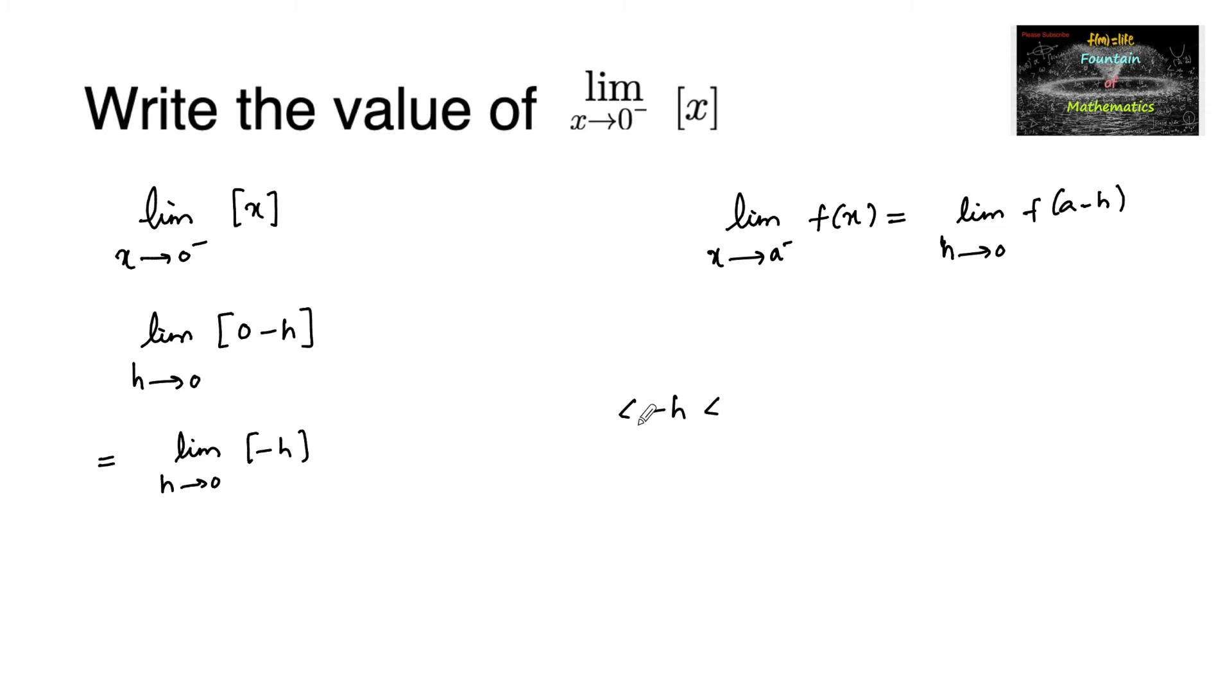Here minus h lies between minus 1 and 0 because it is below 0. So [−h] will be taken as minus 1.